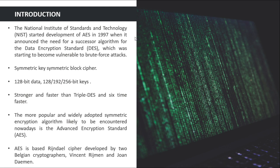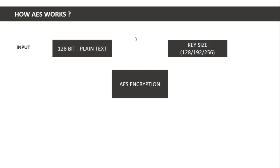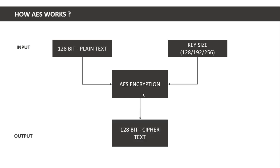I am telling you something you won't find in other videos — how AES actually works. AES encryption takes two inputs: a key and the plaintext. They go into the AES encryption box and we get the cipher text. For the reverse process, we give the key and cipher text into the AES decryption algorithm and get the plaintext back. We are focusing on encryption here; decryption will be covered in another video.